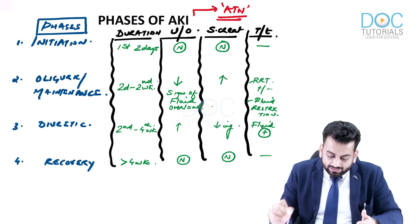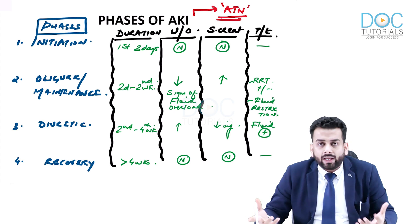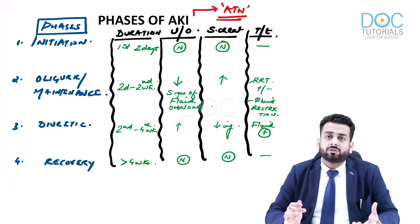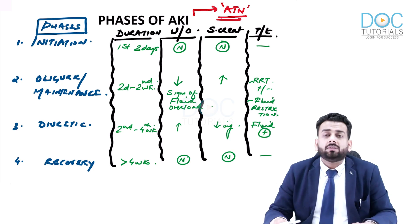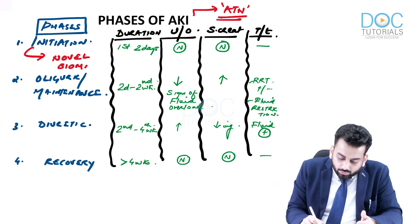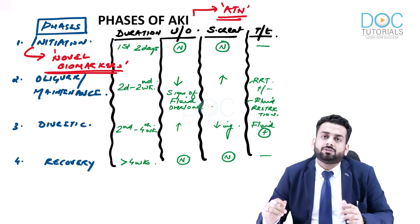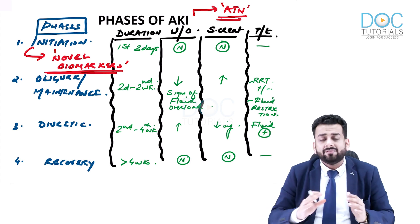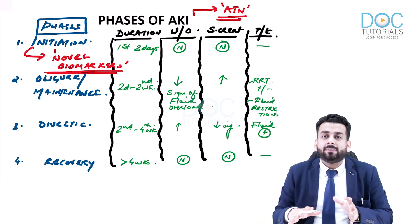An important point: in the initiation phase, most clinicians fail to diagnose AKI because creatinine and BUN have not yet risen. However, novel biomarkers can help diagnose AKI in the initiation phase — these will be discussed in detail when we cover the investigations of AKI. It is also important to note that not every AKI will go through all four phases; these phases were defined with acute tubular necrosis as the prototype.